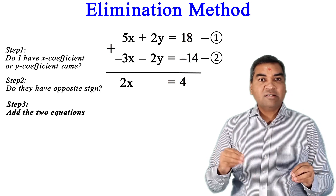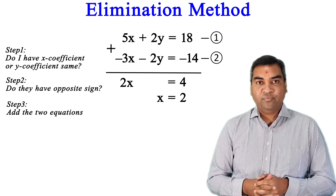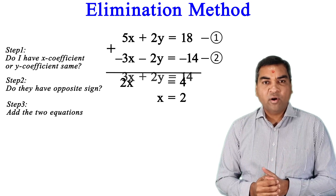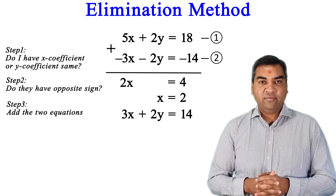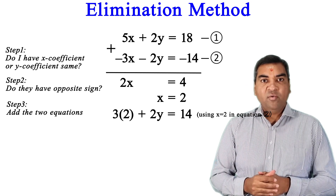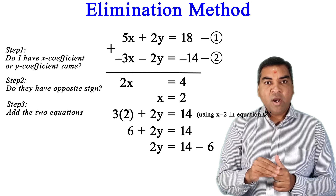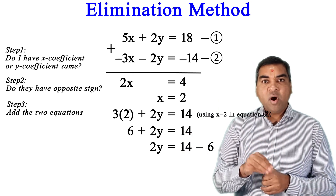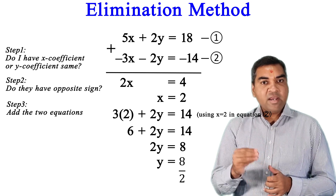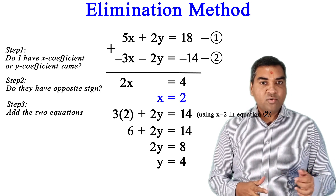On the right-hand side, 18 - 14 = 4, so 2x = 4, giving x = 2. Substituting x = 2 into the smaller equation 3x + 2y = 14: 3(2) + 2y = 14, so 6 + 2y = 14, giving 2y = 8, so y = 4. The solutions for the second kind of question are x = 2 and y = 4.